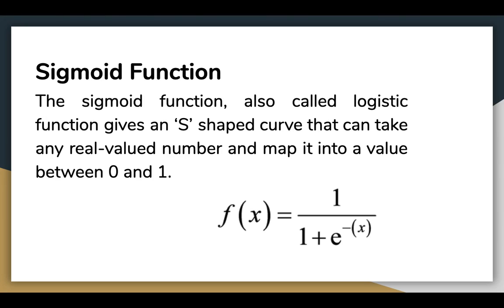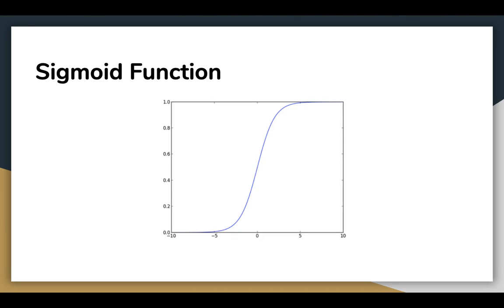The sigmoid function, also called the logistic function, gives an S-shaped curve that can take any real-valued number and map it into a value between 0 and 1. If the curve goes to positive infinity, y predicted will be 1, and if the curve goes to negative infinity, y predicted will become 0.